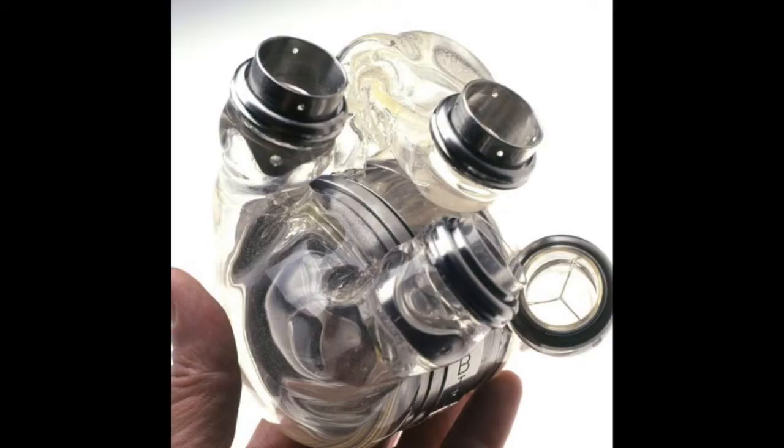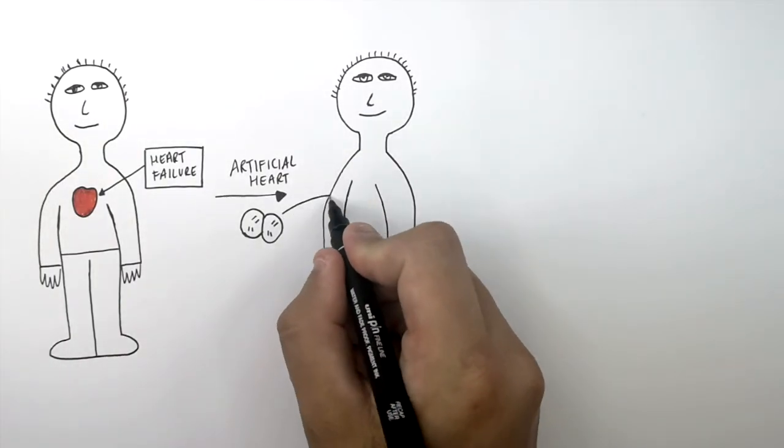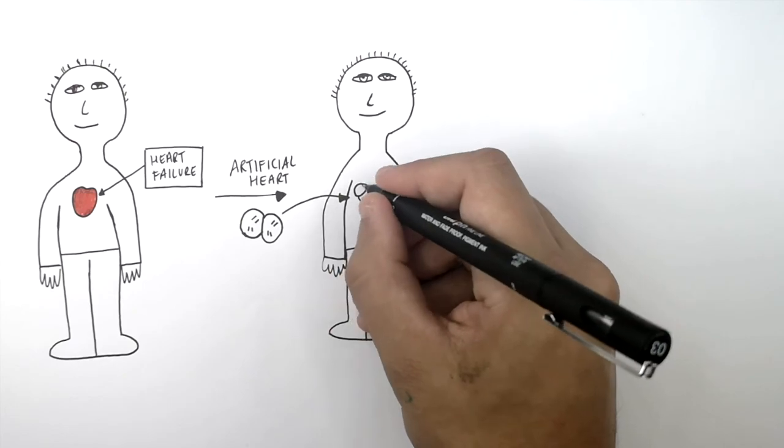So this here is an artificial heart made of plastic and metal. And it has a motor in it. And this artificial heart replaces their failed heart.